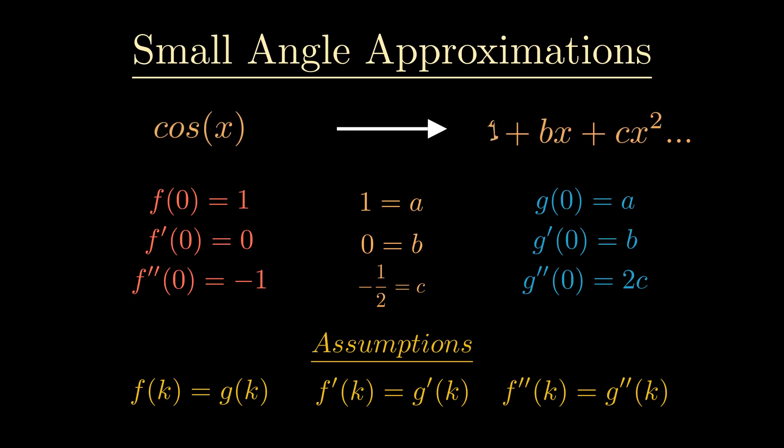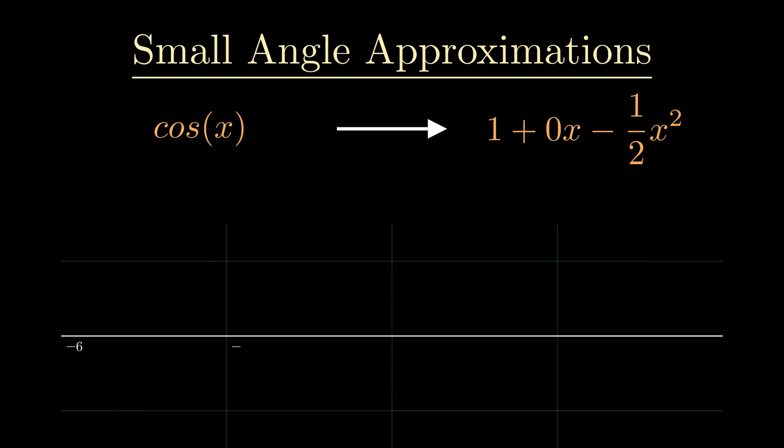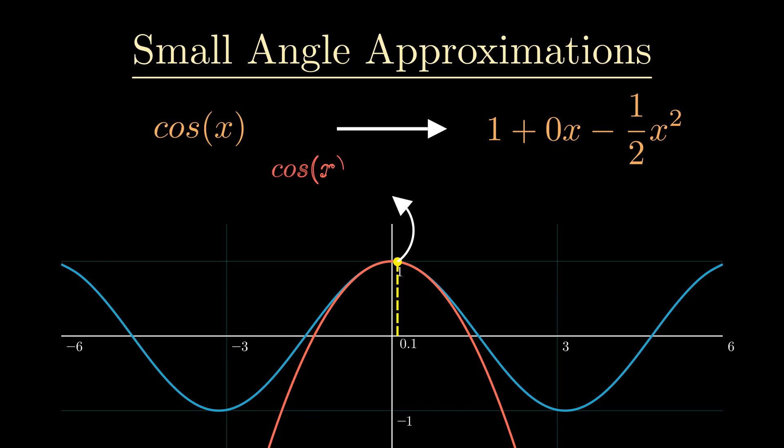We can substitute these constants back into our approximation and it's going to give us one plus zero x minus x squared over two, which is the small angle approximation for cos. Just to give you an idea of how accurate this approximation really is, I'm going to draw the actual function and draw the model we've produced. We can see that at the point of x equals 0.1 our model is correct to five significant figures, which is unbelievably close.